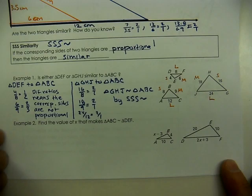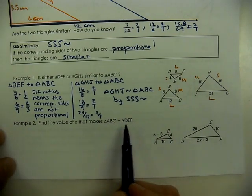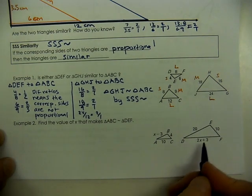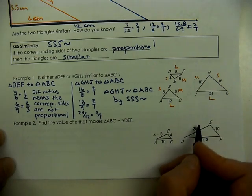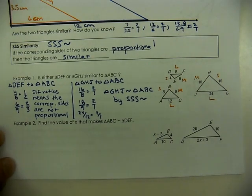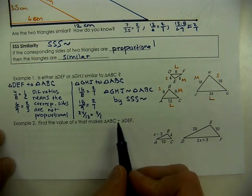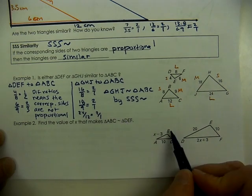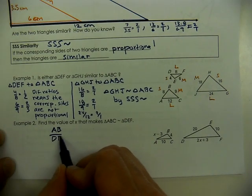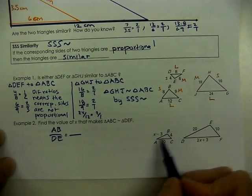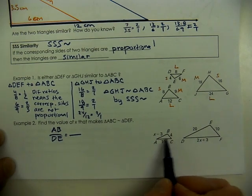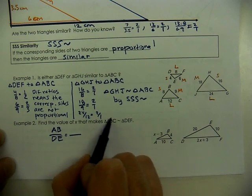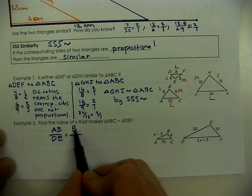This next example is working backwards — we're trying to make the triangles similar by finding what value of X makes the corresponding sides proportional. We can't check proportionality yet because of the variable. We'll set up a proportion using sides AB pairing with DE, and BC pairing with EF, since using the bottom sides would introduce another variable. So we use BC and EF — those are the corresponding parts.